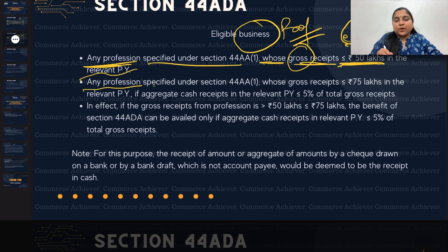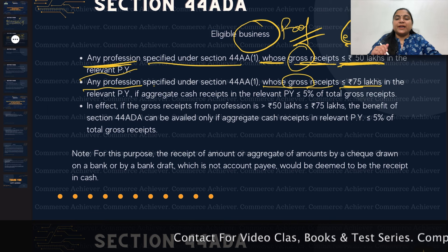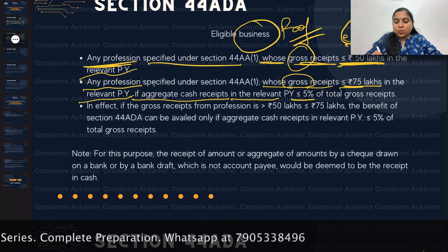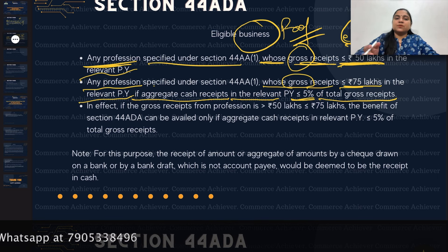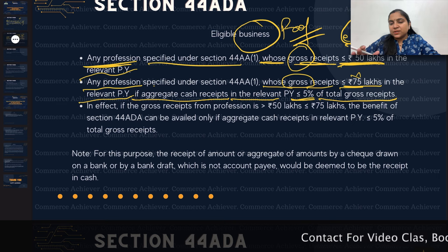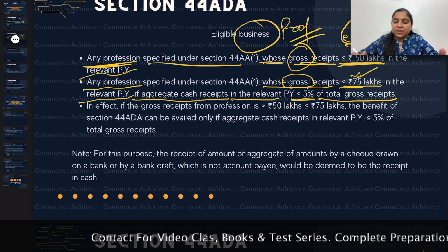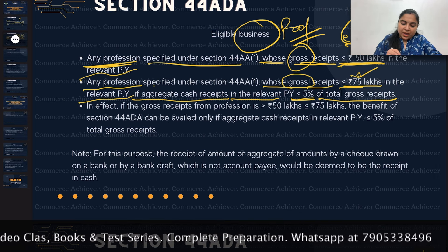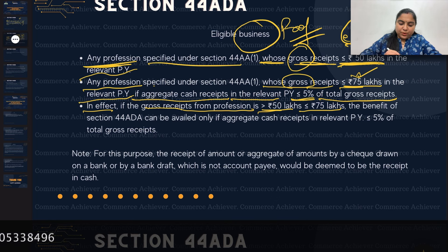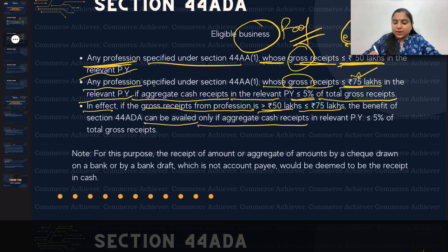Any profession specified under Section 44AA sub-clause 1 whose gross receipt is equal to or less than 75 lakhs — if in the relevant previous year the aggregate cash receipt is equal to or less than 5% of total gross receipt, then you can get the benefit of 44 ADA with a 75 lakh limit. If cash receipt exceeds 5%, then the applicable limit is 50 lakhs. So, if gross receipt is more than 50 lakhs but equal to or less than 75 lakhs, the benefit of 44 ADA can be availed only if aggregate cash receipt is equal to or less than 5% of total gross receipt.